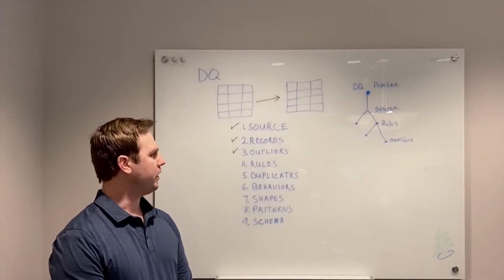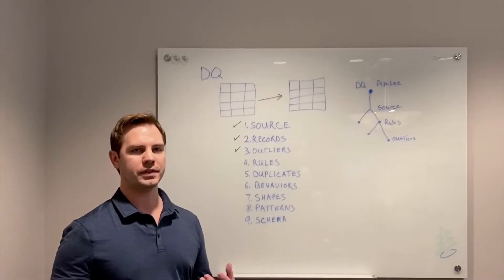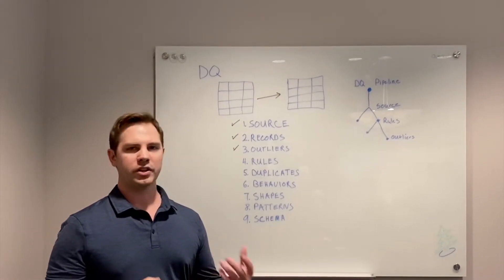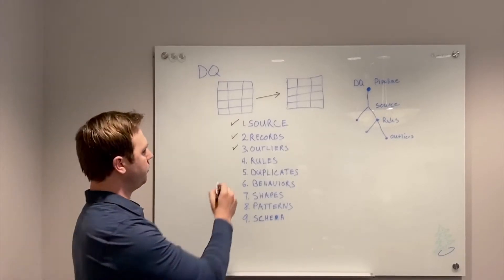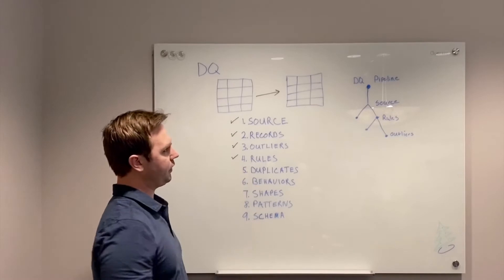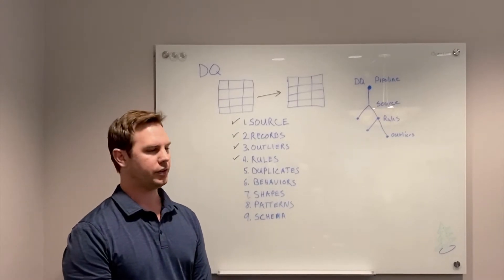The most common is probably rules. These are where businesses say we understand our business really well and we write complex rules that describe what we need to learn about the data and trigger when it's incorrect.